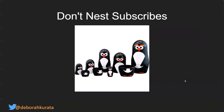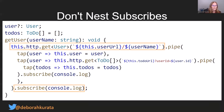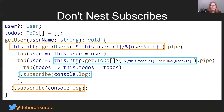We want to ensure we don't nest subscribes. What do I mean by that? Here's an example. We're looking at a procedural approach. We're doing an HTTP GET to get the user, subscribing to that, but we also want to get the to-dos for that user, so we're subscribing to that as well. So we've nested another subscribe within this subscription.